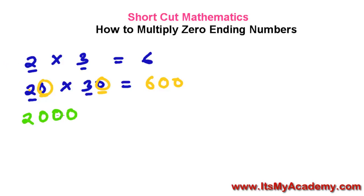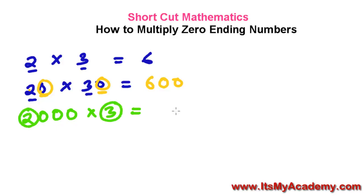Let's say we have 2,000 and here just 3. So now 2,000 times 3 — same method. 3 times 2 is 6, and then followed by three zeros. So it's 6,000.